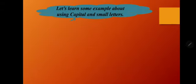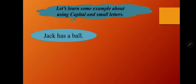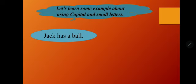Let's learn some examples about using capital and small letters. 'Jack has a ball.' Here, Jack is a person's name, so J is written in capital. Also, the first word of any sentence always starts with a capital letter. Ball is the name of a thing, so its first letter is written in small.